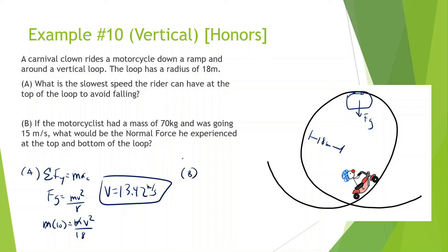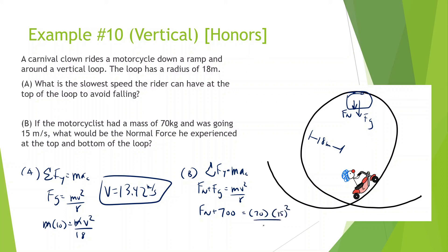Part B: the motorcyclist has a mass of 70 kg and was going 15 meters per second — faster than 13.42 meters per second. What will the normal force be? We know there is a normal force going downwards because now he's going faster than the minimum. Sum of all forces in the y equals mass times centripetal acceleration. They're both pointed towards the circle, so both positive. Force normal plus force of gravity equals mv squared over r. Force of gravity is 700. Mass is 70, v squared is 15 squared, divided by r 18. Normal force equals 15 squared times 70 divided by 18 minus 700, and we get a normal force of 175 newtons.